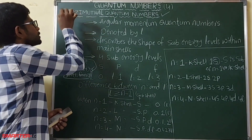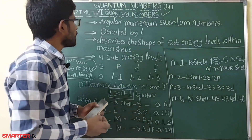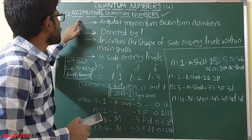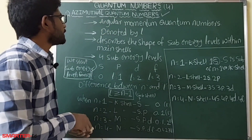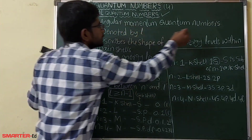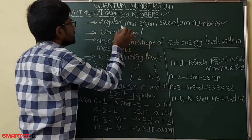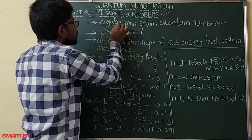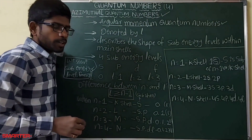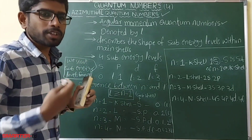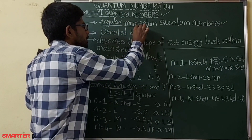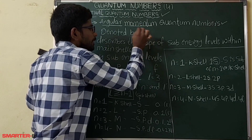The second quantum number is the azimuthal quantum number. It is also called the angular momentum quantum number. This azimuthal quantum number is denoted by small l.